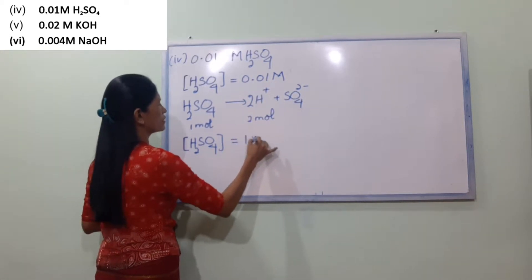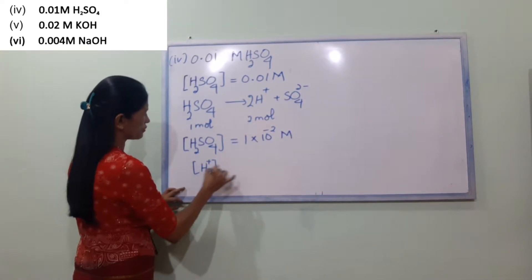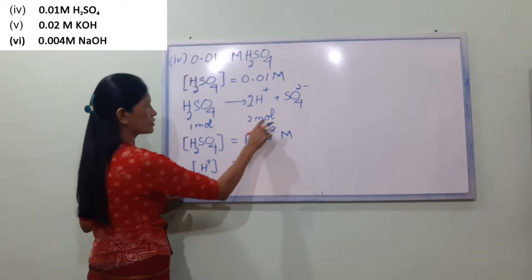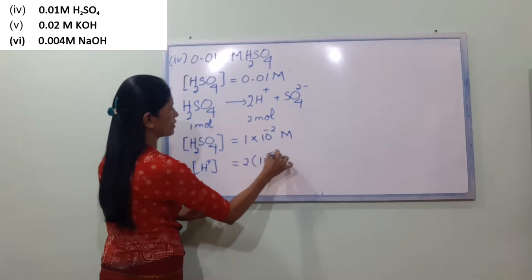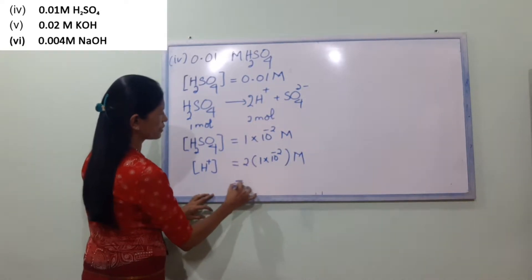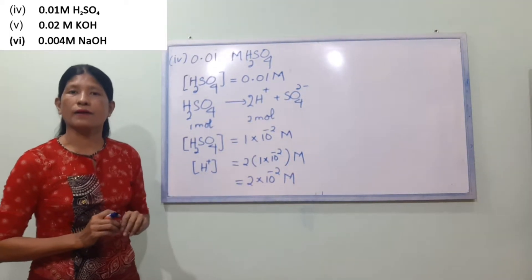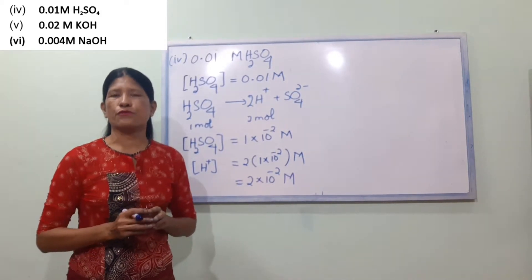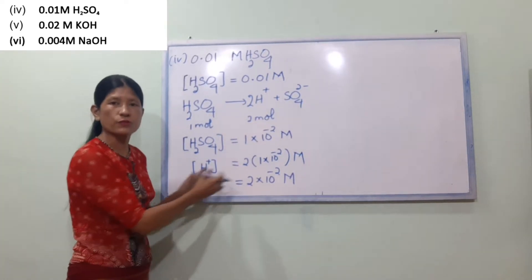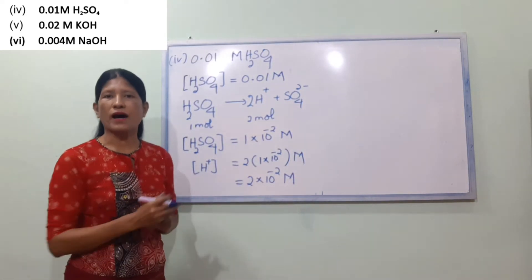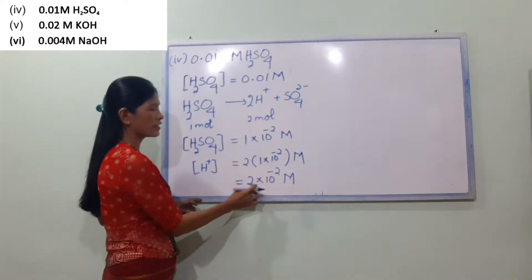So if we have H2SO4 = 0.01 mol, then H⁺ concentration is equal to 2 × 0.01 = 2 × 10⁻² molar.